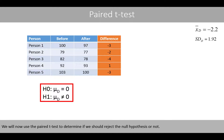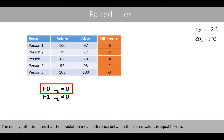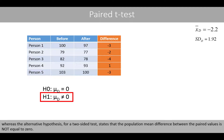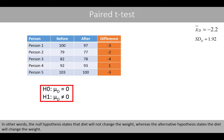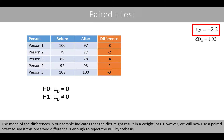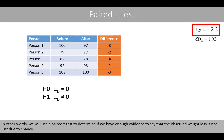We'll now use the paired t-test to determine if we should reject the null hypothesis or not. The null hypothesis states that the population mean difference between the paired values is equal to zero, whereas the alternative hypothesis for a two-sided test states that the population mean difference is not equal to zero. In other words, the null hypothesis states that the diet will not change the weight, whereas the alternative hypothesis states that the diet will change the weight. The mean of the differences in our sample indicates that the diet might result in weight loss. However, we'll now use a paired t-test to see if this observed difference is enough to reject the null hypothesis — that is, to determine if the observed weight loss is not just due to chance.